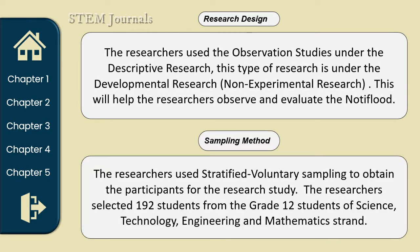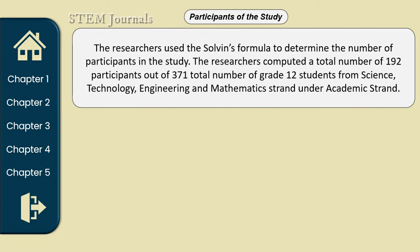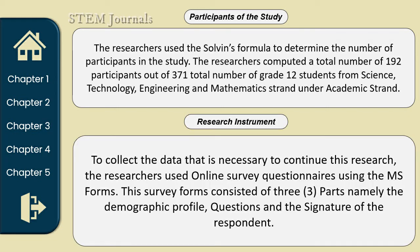For the sampling method, we, the researchers, used the stratified voluntary type of sampling method. This sampling method divides the entire population into subgroups, but the collection of respondents within subgroups is not randomly selected — it is done voluntarily. To determine the total number of participants, we used a solving formula to determine how many respondents we need. For the research instrument, we used an online survey questionnaire using Microsoft Forms to collect data. The questionnaire is divided into three parts: demographic profile, research questions, and respondent signature.